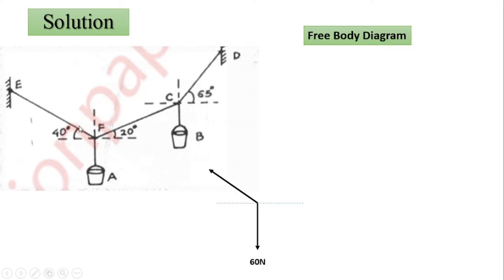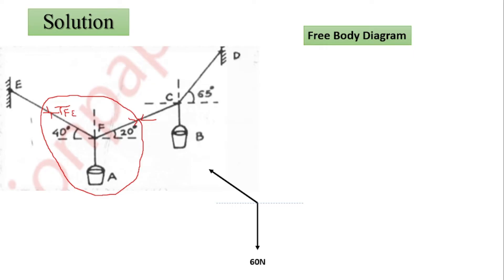The weight of A is equal to 60 Newton, which is given. Joint F is connected with joint E — we cut this cable at the center and separate joint F from the rest of the figure. We can observe the tension in cable FE as well as FC. The tension is named TFE and TFC. Tension always acts in the outward direction, away from the center. The angle of tension TFE with the horizontal is 40 degrees, and the angle of tension TFC is 20 degrees. In this way we have one concurrent system formed by three forces.